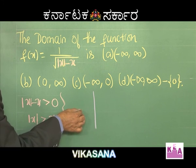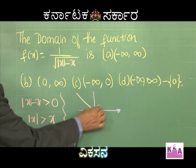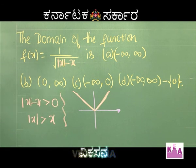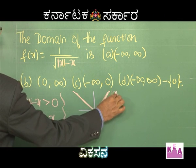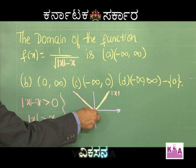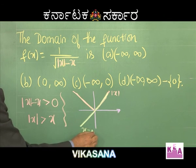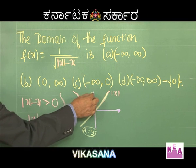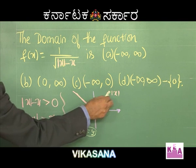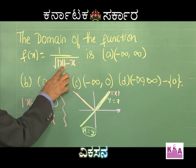Let us draw the graph of both |x| and x to analyze. The graph of y = |x| is a V-shape: it equals x if x is positive, and minus x if x is negative. The second graph is y = x, the green line. If you observe carefully, for all values of x greater than 0, |x| is the same as x, so the denominator becomes 0 — that is a ruled out condition.